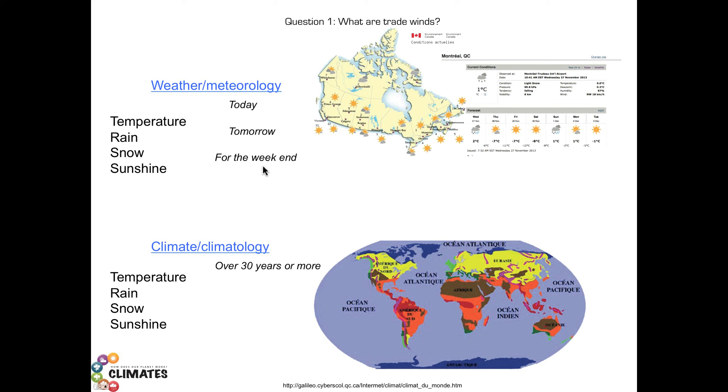When considering the climate or its science, climatology, we are using the same variables. But this time, over a period of 30 years or more, it gives maps of climates at a planetary or regional scale.